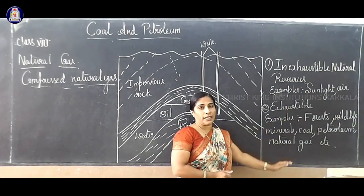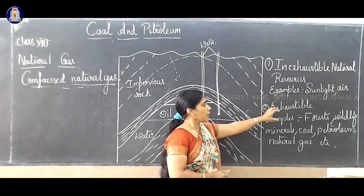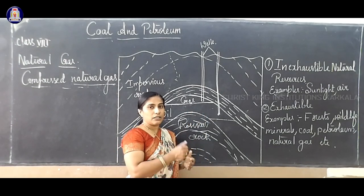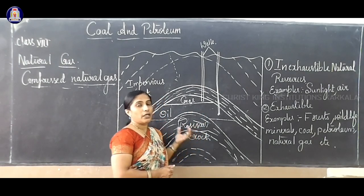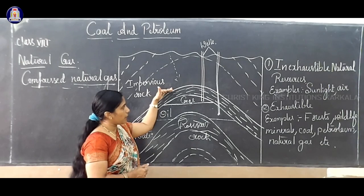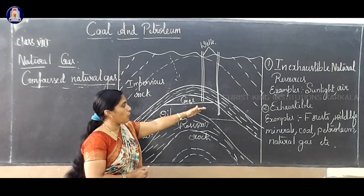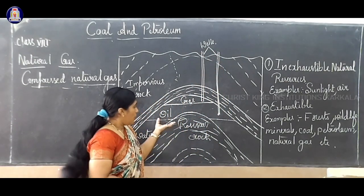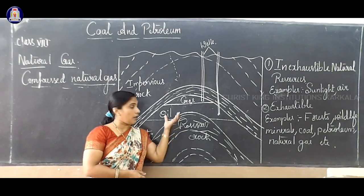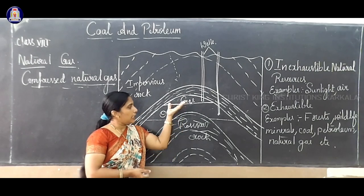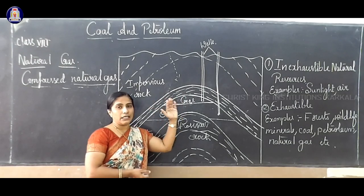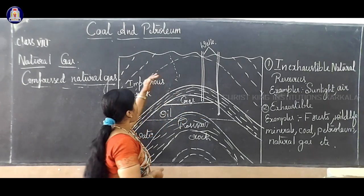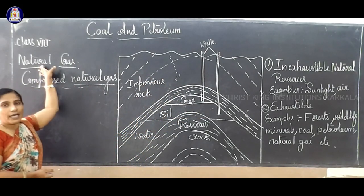Compressed natural gas is not easily available because it comes under exhaustible resources. How can we use it in a reduced amount? That's why only we can preserve it, because it takes billions of years to form compressed natural gas. This is the method, where it will be used. If you observe, all these wells where they are expecting oil and gas are present in Rajasthan, Delhi, and many places in India.